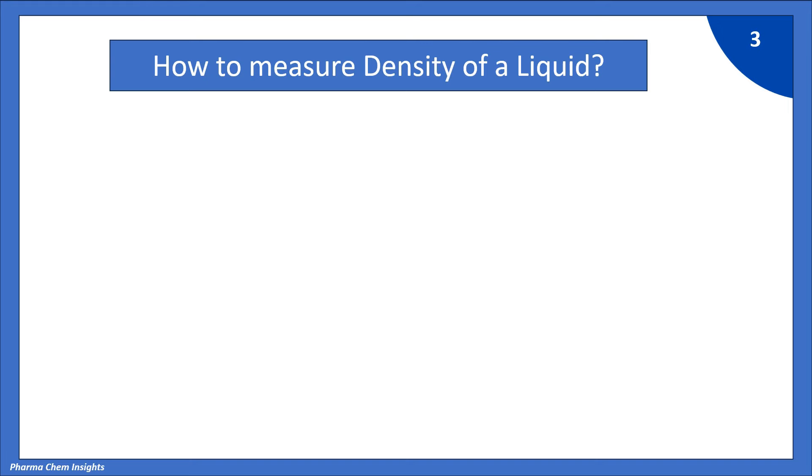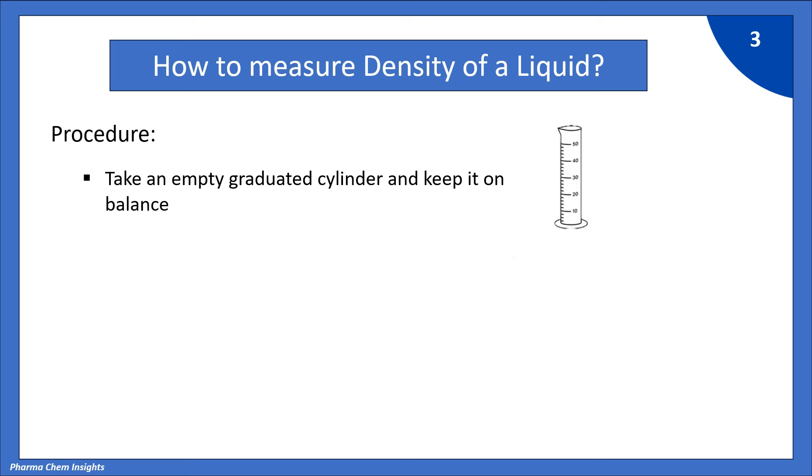Now, let us see how to measure density of a liquid. Procedure. Take an empty graduated cylinder and keep it on balance. Tare 0. Measure 25 ml of liquid in the same cylinder whose density you have to calculate.